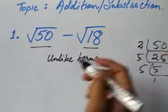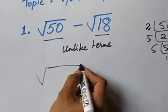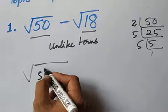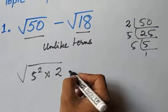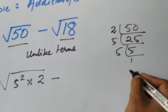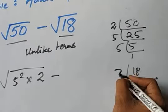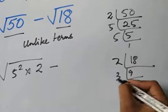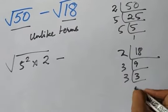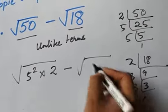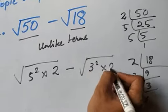So you see 5 as a square and 2. So what do we get for this is 5 squared into 2. And for 18, we have 2 times 9 is 18, 3 times 3 is 9. And for that we have 3 squared into 2.